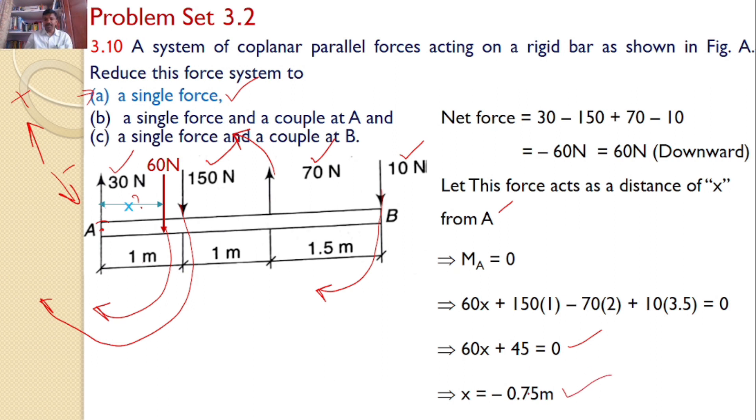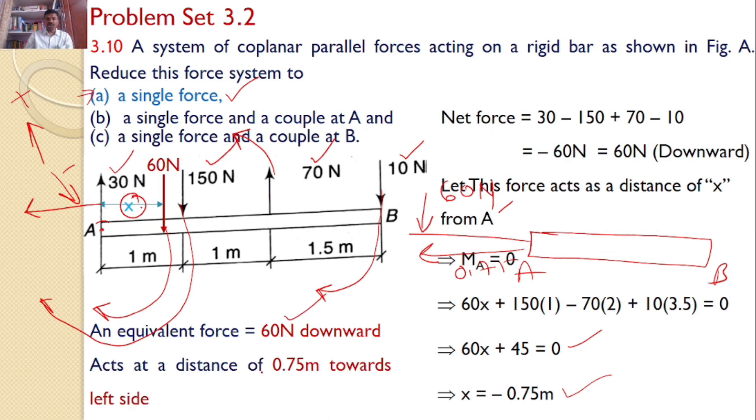What is the meaning of this minus 0.75 meters? That means that this X is not towards the right side, this X is acting towards the left side. That means this AB bar, this is the system AB, and I can replace this total force system into a single force of 60 Newtons which is acting at a distance of 0.75. So the equivalent force is 60 Newtons downwards and at a distance of 0.75 meters towards left side from point A. This is the answer.